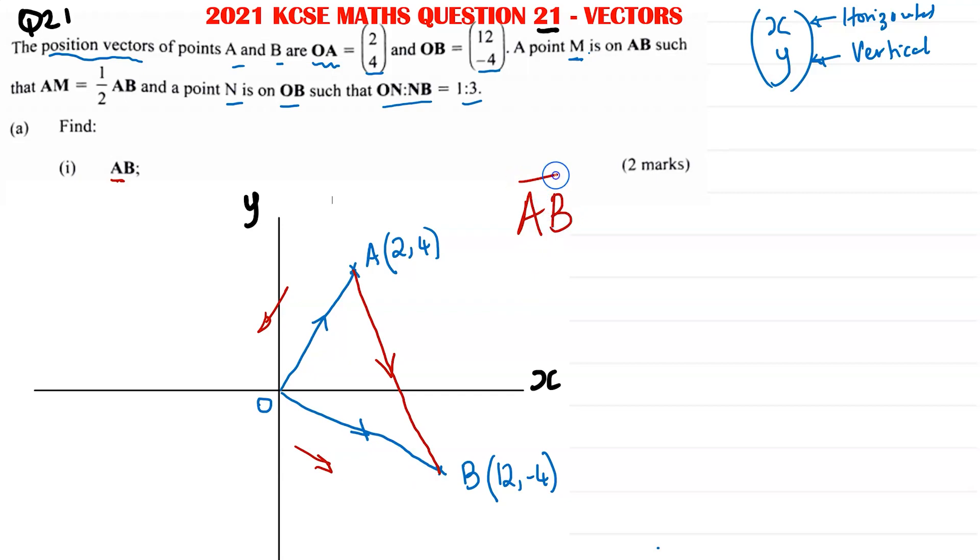So let's write those in. Vector AB is going to be equal the opposite of OA, so (-2, -4) plus our OB, which is given (12, -4). And if you work this out, you will get -2 + 12, which is 10. -4 + -4, you will get -8. So the vector AB is equal to (10, -8).